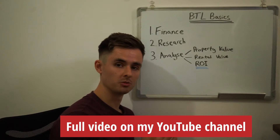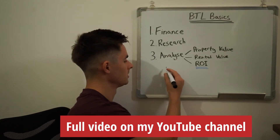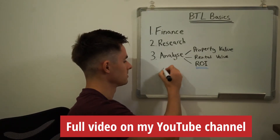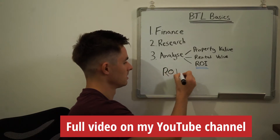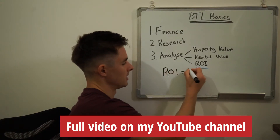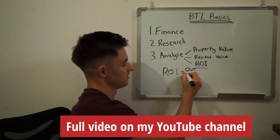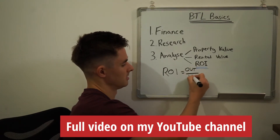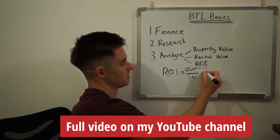To work out return on investment, we use this formula here. ROI — return on investment — equals money out over a 12-month period versus money in, times 100.